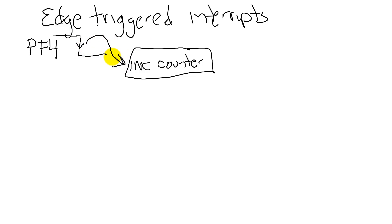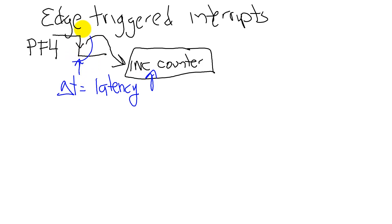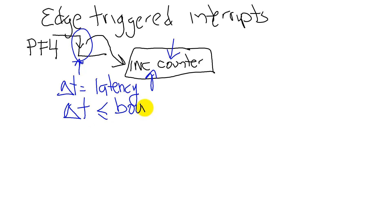The time between the hardware event and the software action is called latency. This is a time delay between a desire and an action. And if this latency is less than a bound — in other words, it's always less than some number — then we will classify this system as real-time.